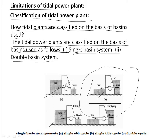In the single ebb cycle system, the sea water fills up the basin through the sluice walls when the water level rises during high tides. The stored water in the basin is made to run the turbines when the sea water level decreases during low tides. The turbines generate power using generators. The power output from this system is intermittent as power can be generated only during low tides.